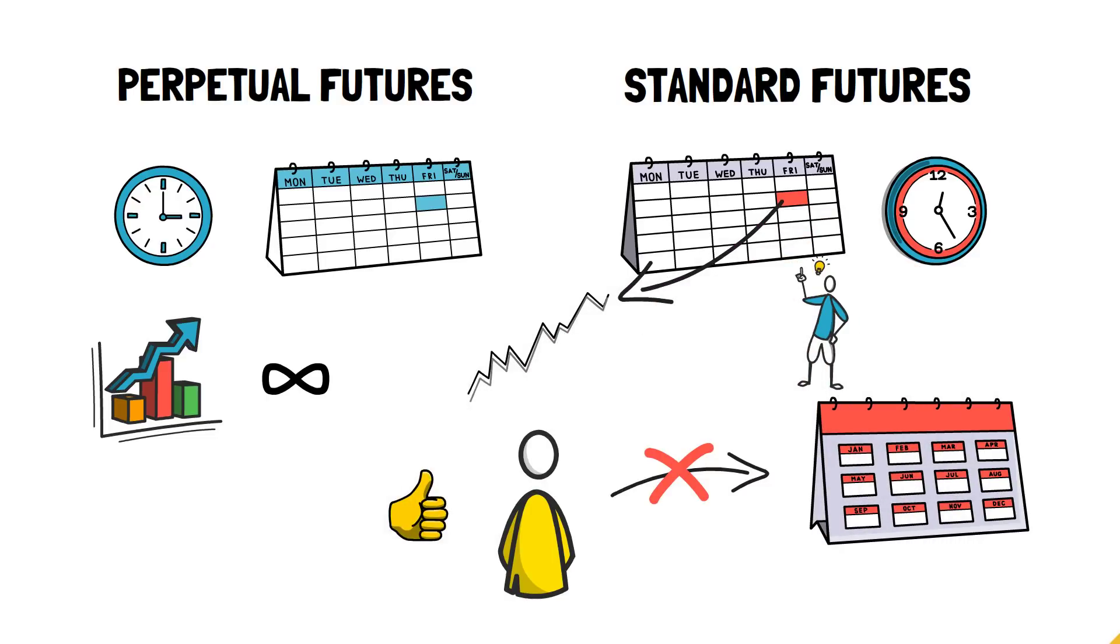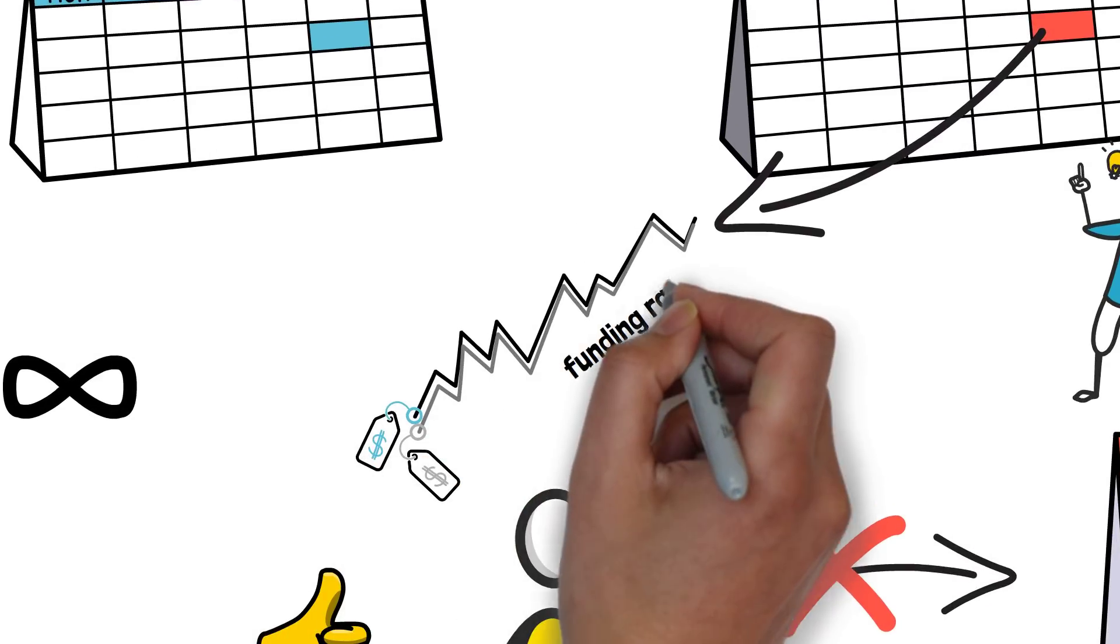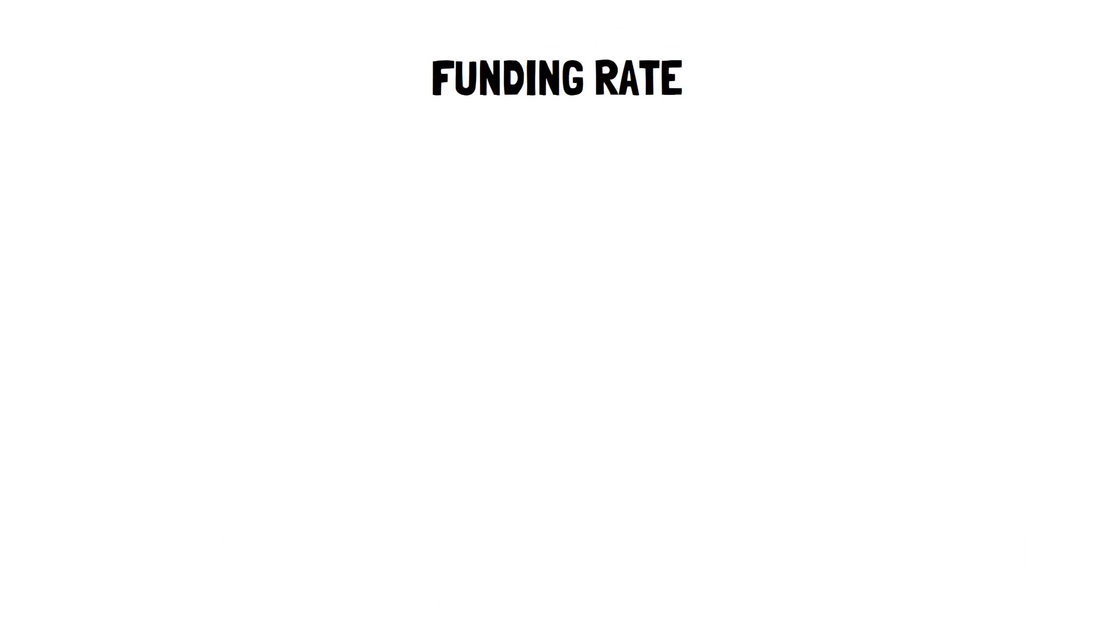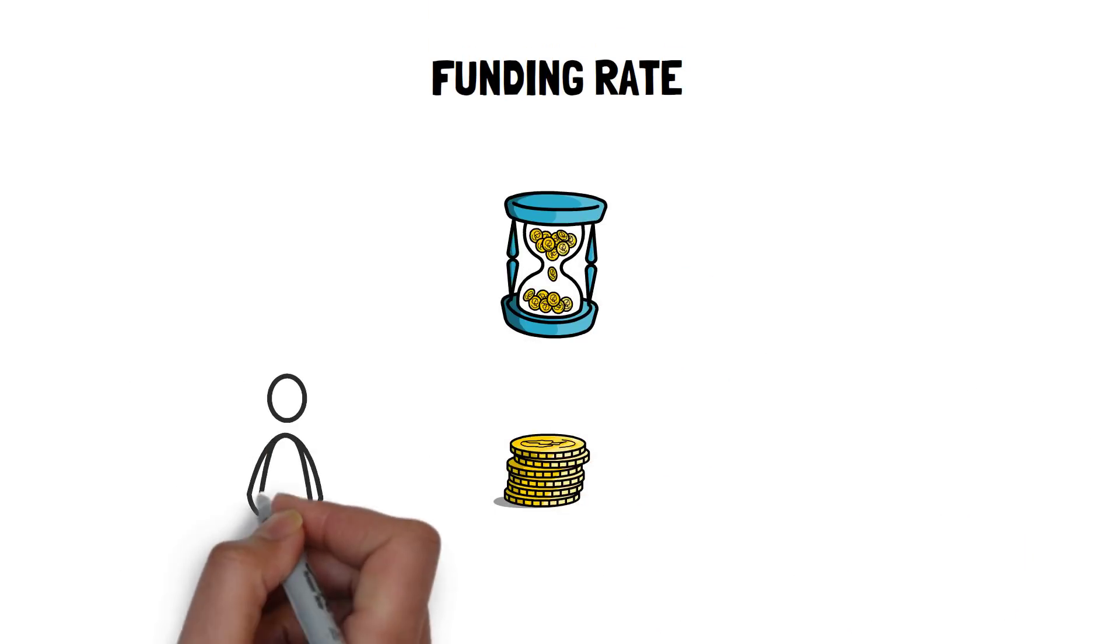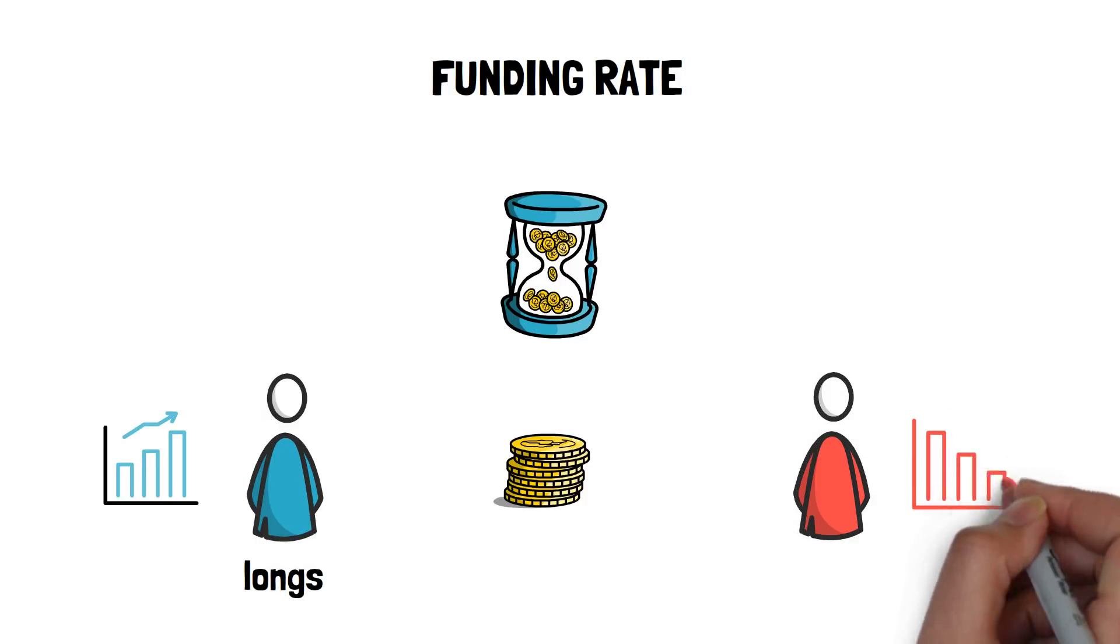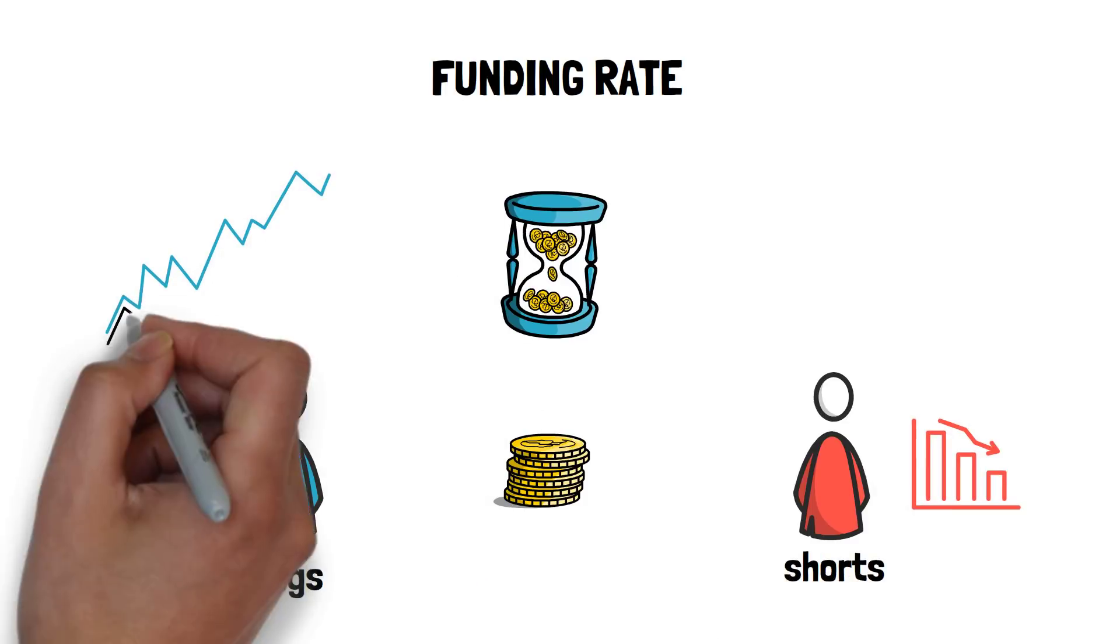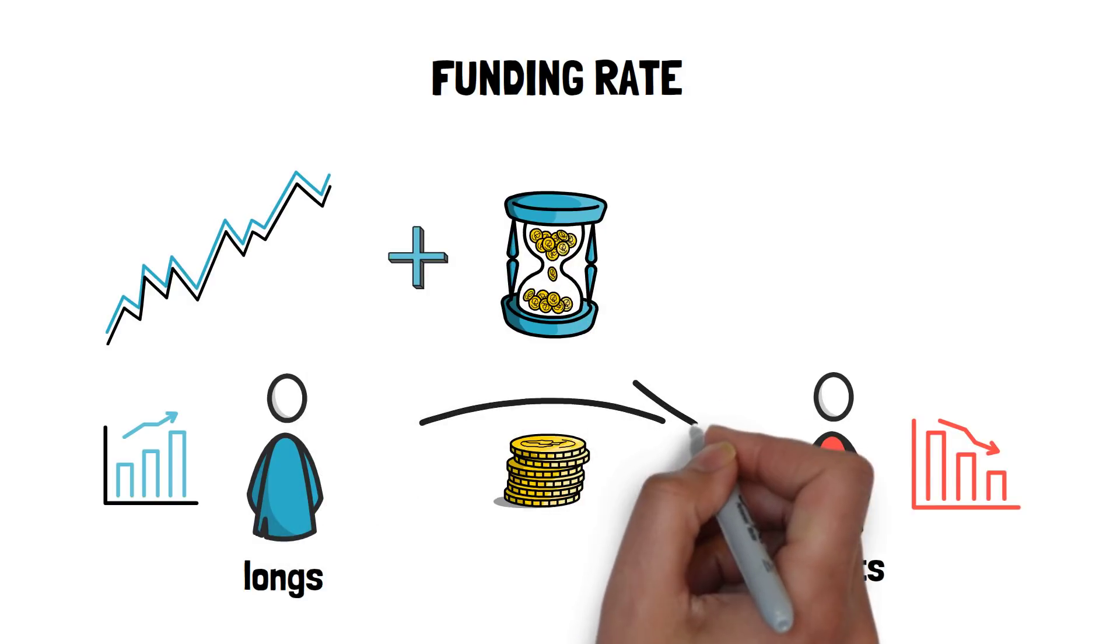To make sure the price of perpetual contracts doesn't diverge too much from the price of their underlying assets, perpetual contracts use a funding rate. The funding rate is paid periodically and provides incentives to one side of the market, either market participants with open long positions or open short positions. In general, when the price of the perpetual contract is trading above the price of its underlying assets, the funding rate becomes positive and longs pay shorts.